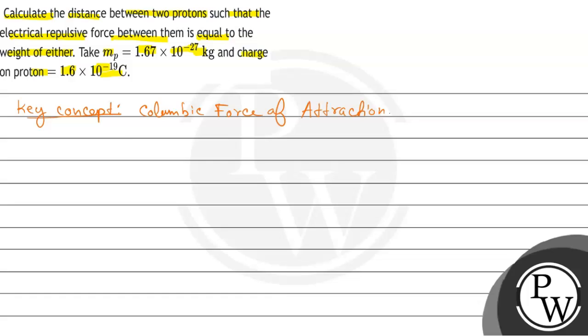Jahan par bolega hai ki agar suppose yeh charge Q1 aur yeh charge Q2 aapse mein R distance pe rahega, to jo force of attraction aur repulsion hoga, wo hoga F equals to K Q1 Q2 by R square hoga, par K equals to 1 by 4π epsilon not, where epsilon not is the permittivity of free space.